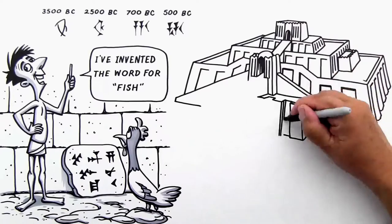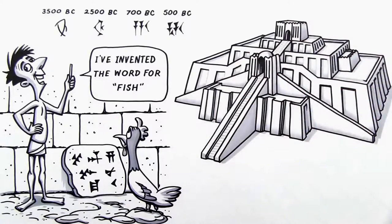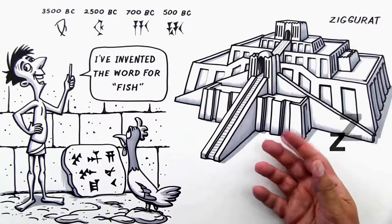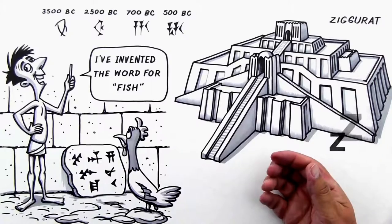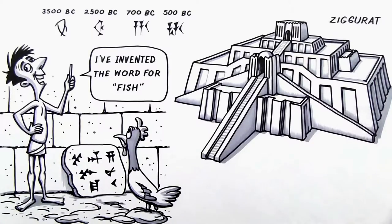In Ur, they built a massive ziggurat to pay homage to the gods. Ziggurat. I love the sound of that. The ziggurat was the center of the city. Ahem. Moving on.